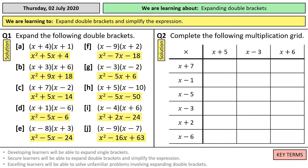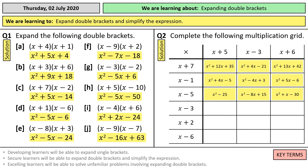Now on to question two — I'm going to fill these in very quickly. There's your first set of answers there, and then the next row, third row. On that x minus 5 times x plus 5, the middle term disappears because you have a minus 5x and a plus 5x — they cancel each other out. And finally, there again the minus 6x and the plus 6x cancel each other out, so you just have x squared minus 36.